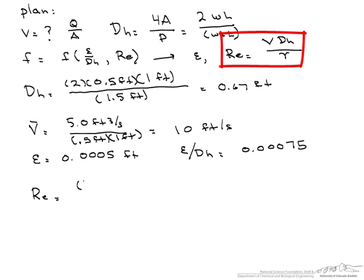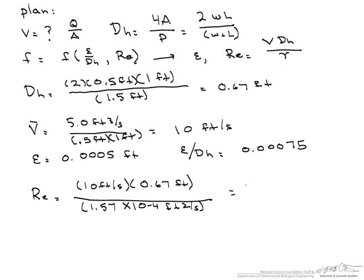The next thing we need to do is calculate our Reynolds number, and so that's our average velocity, which is 10 feet per second. Again, we have to use, instead of diameter, our hydraulic diameter, which is 0.67 feet. And we look up the kinematic viscosity in standard conditions, and that's 1.57 times 10 to the minus fourth feet squared per second. And when we calculate this, we get a Reynolds number of 4.3 times 10 to the fourth.